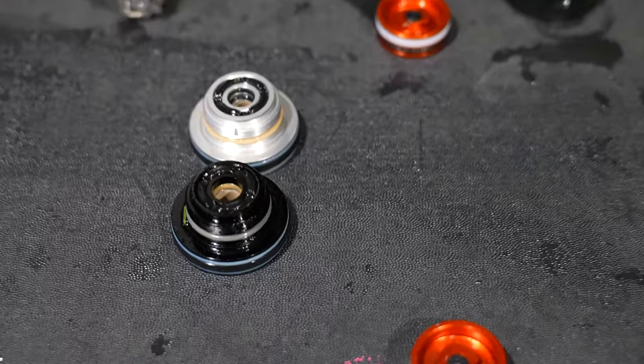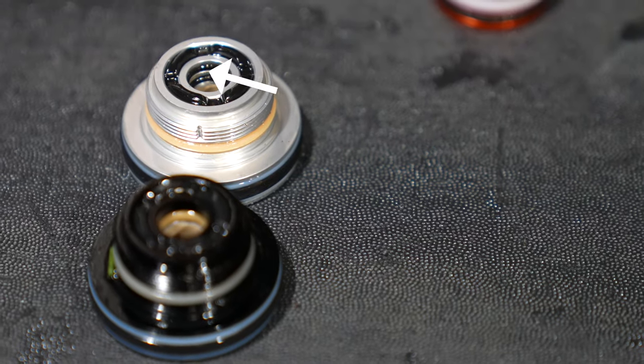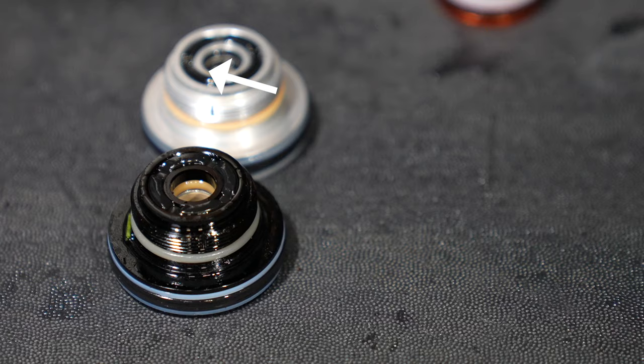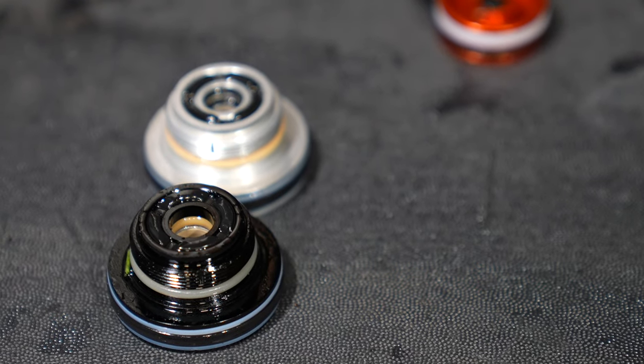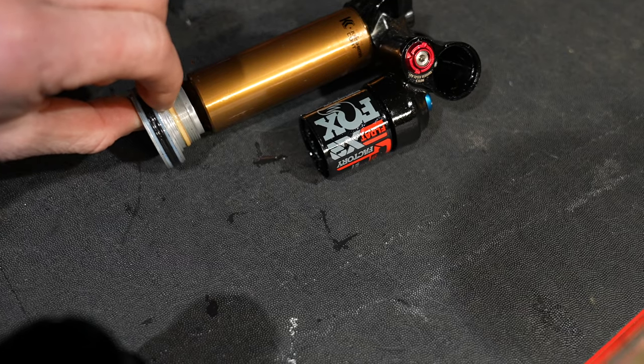This is the main seal head on the 24, and it has two O-rings inside. So that's one of the major reliability updates. So hopefully air doesn't get into the oil. This piece basically seals the oil within the shock. Fox calls it a bearing, but we'll call it a seal head.